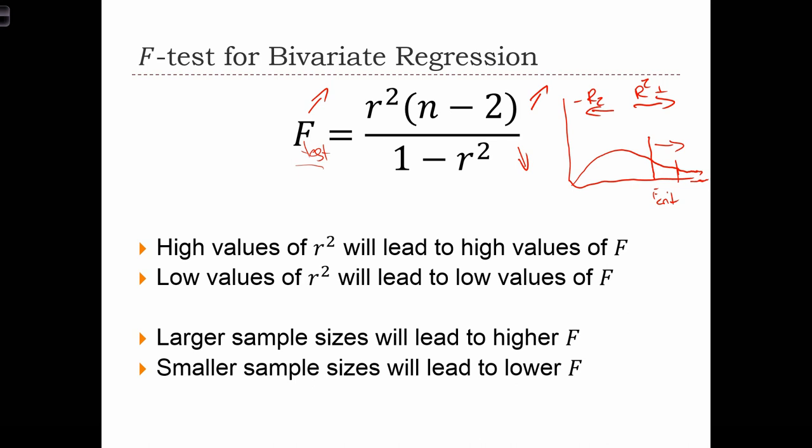We also see that the F statistic depends on the sample size. It only appears once in the equation over here in the numerator. So larger sample sizes will lead to higher F scores, and lower sample sizes will lead to lower F scores.